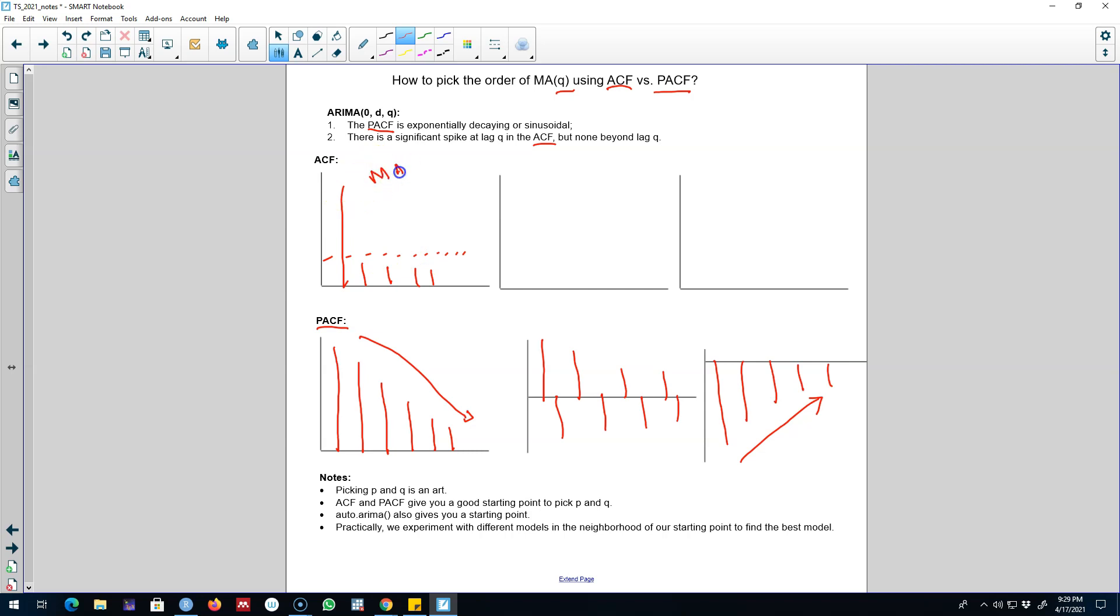If we have a situation like this, we will include only one lag value of the error. That is, we'll choose an MA(1) model.